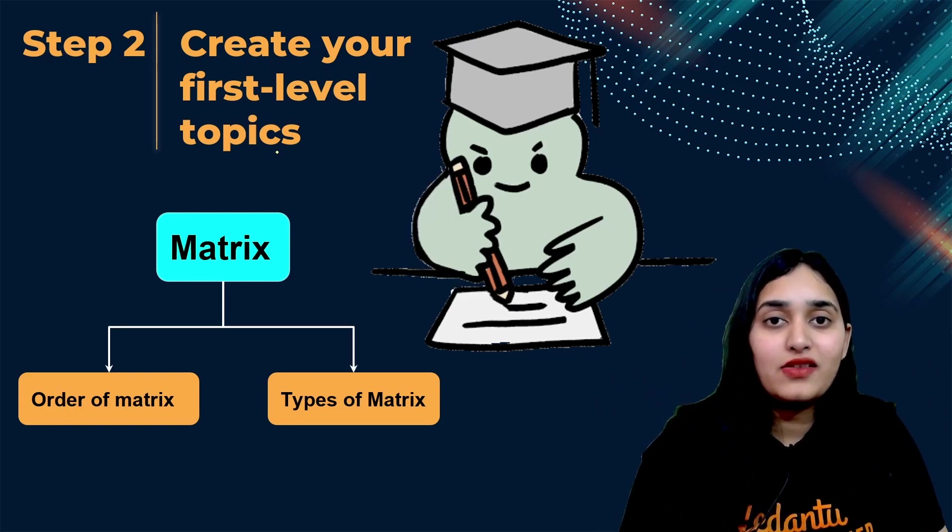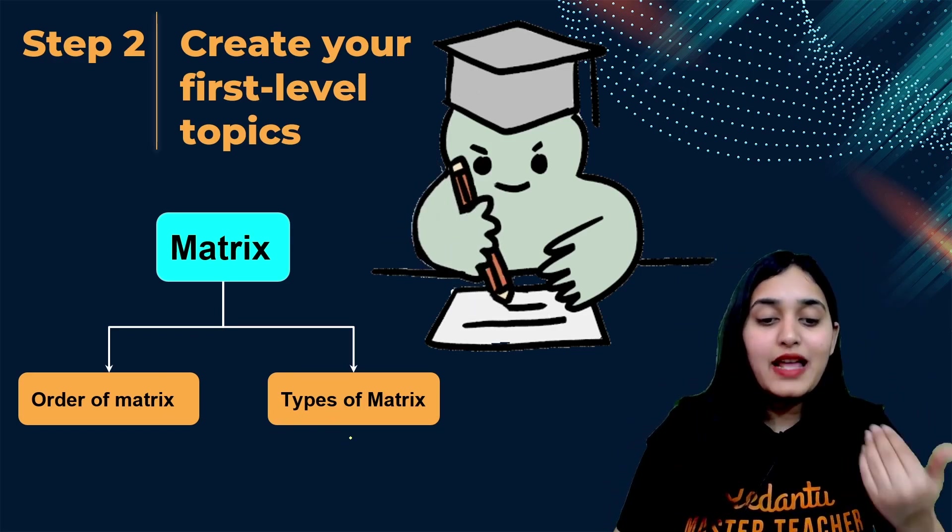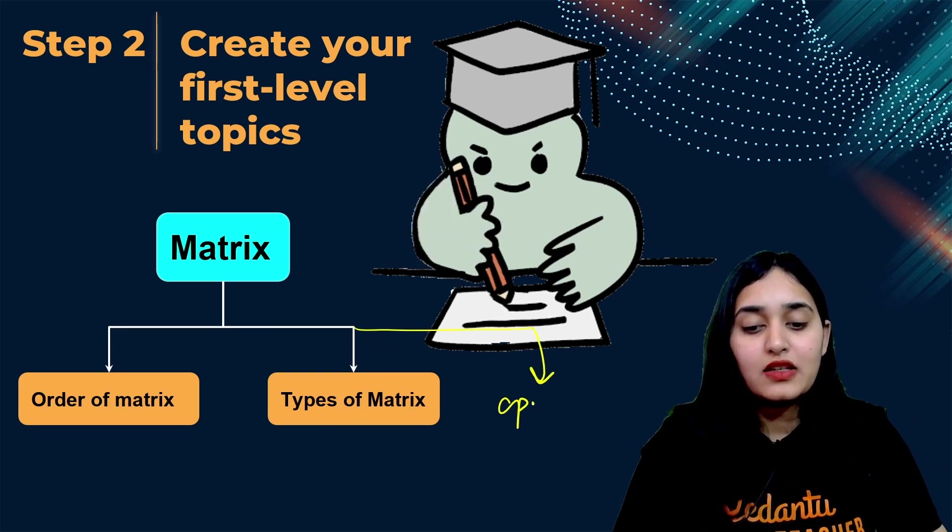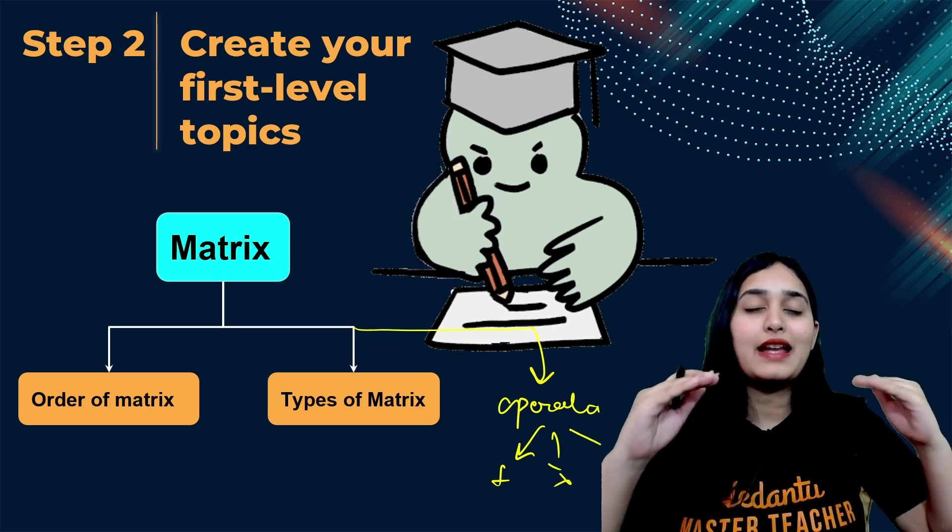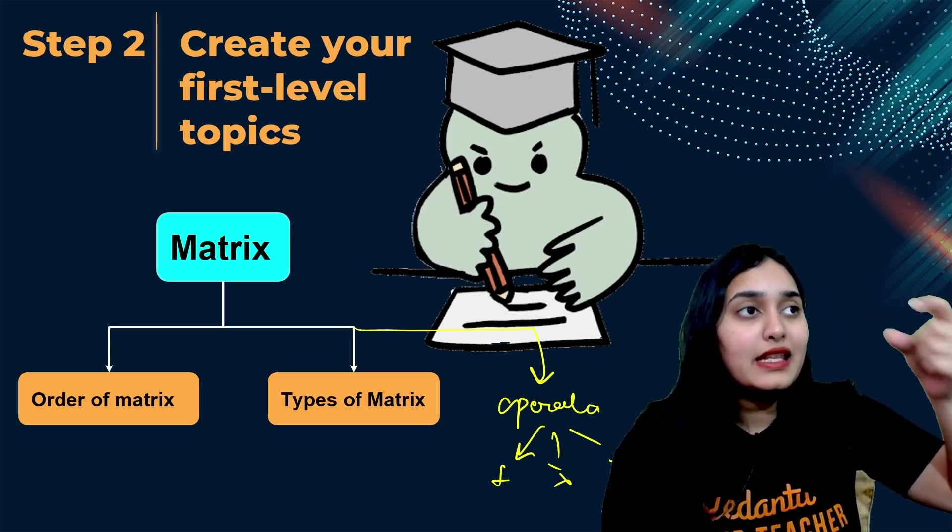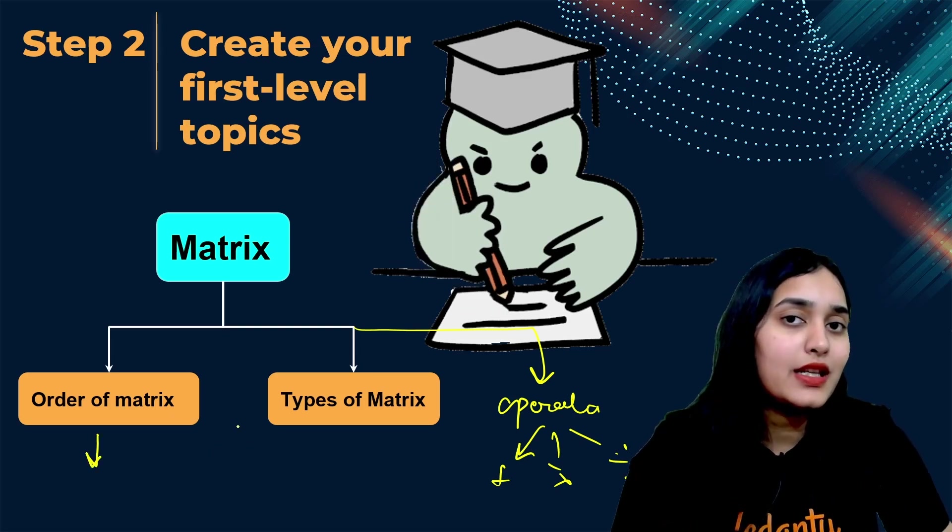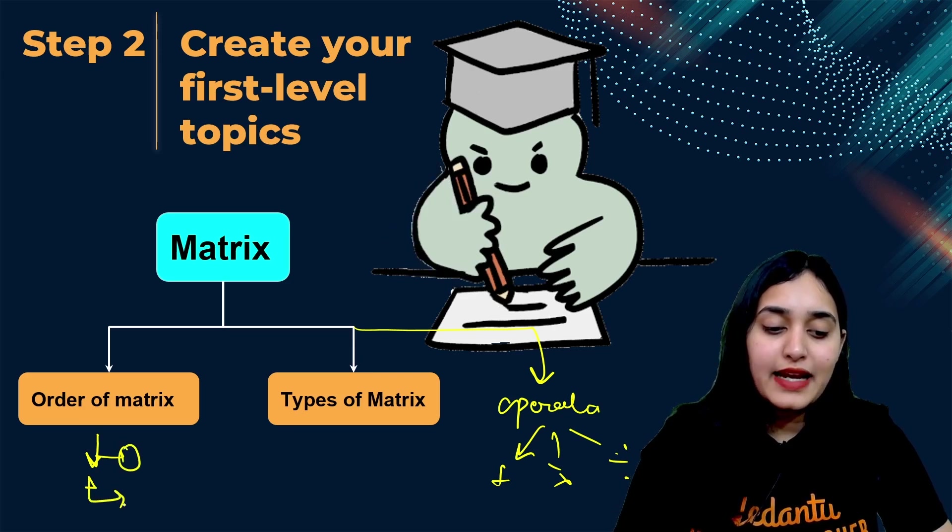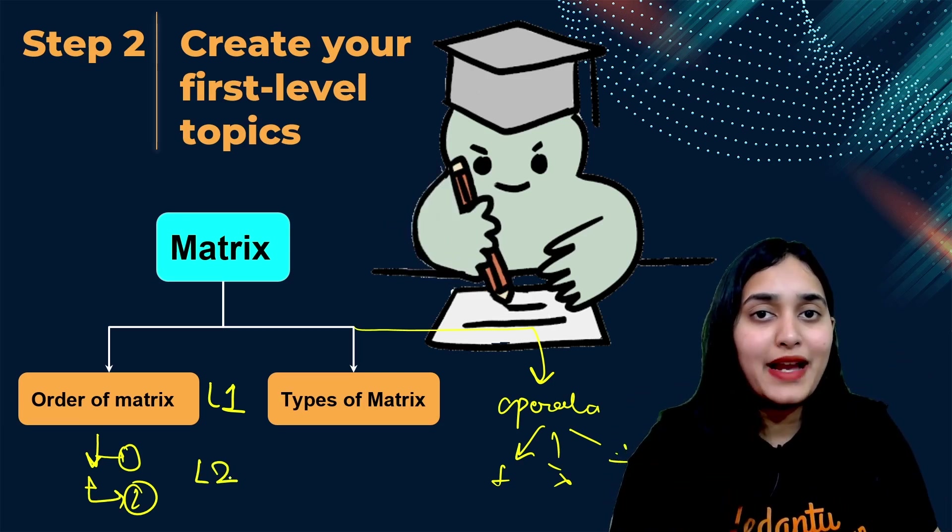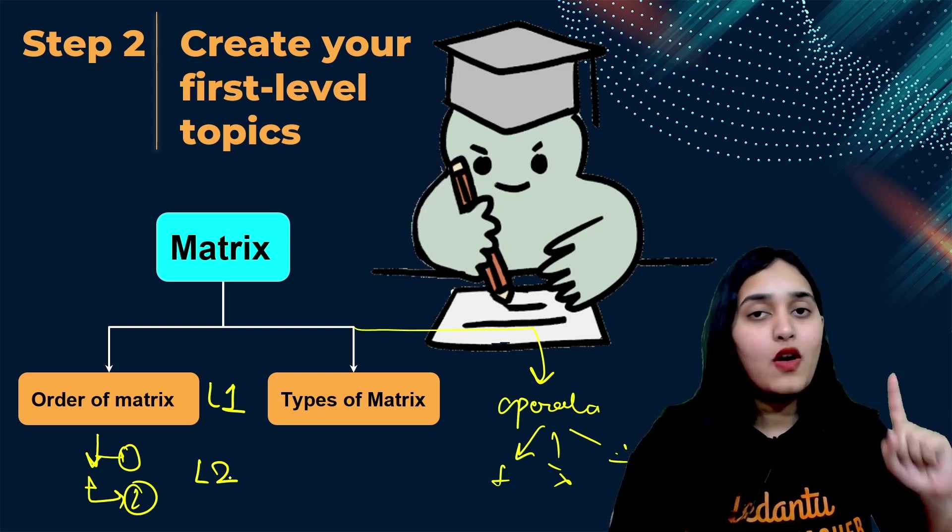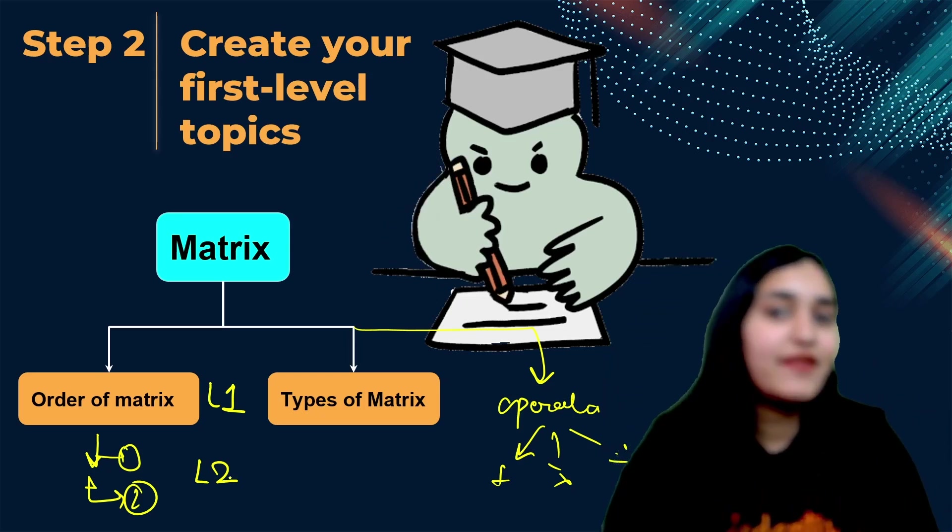Now create level-wise topics. Now what is level-wise topic? Suppose inside matrix, first you have order of matrix, you have types of matrix. After types of matrix, you have basically operations of matrix. Now in operations of matrix, you have multiplication, addition and division of matrix. So like this, you're basically creating levels that these are the main topics. Inside main topics, these are the subtopics. So once you know that inside order of matrix, you don't have to learn anything else. There is one formula, there is this second formula. That's it. So this becomes level 1, this becomes level 2 and now you have a clear picture in your mind that these are the two formulas inside order of matrix. Now similarly, level 3 will be like addition formulas, multiplication formulas that will go in level 3.